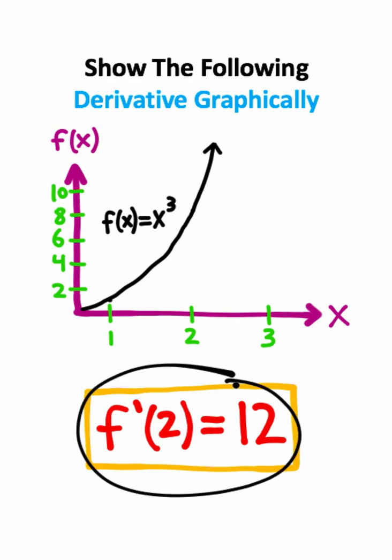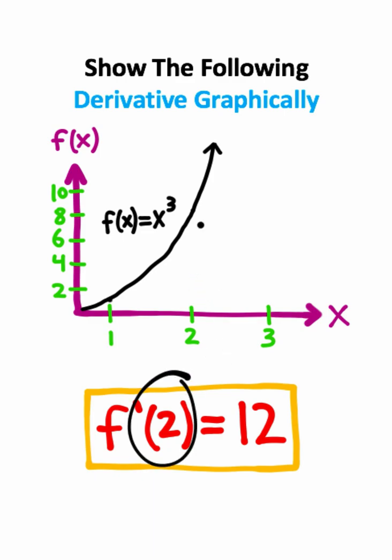Now what this derivative is doing is it's basically telling us what the slope of a tangent line is drawn at a certain point on our curve, which in this case is going to be x equals 2.